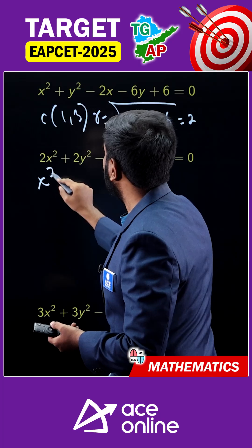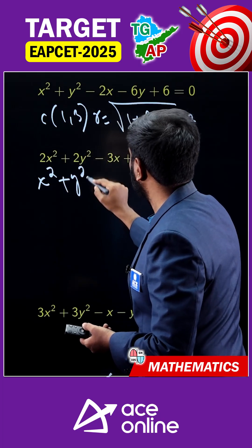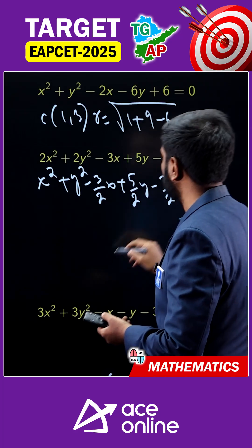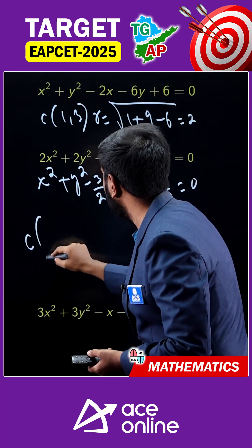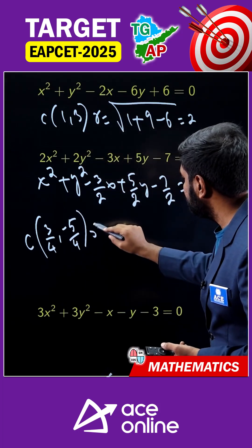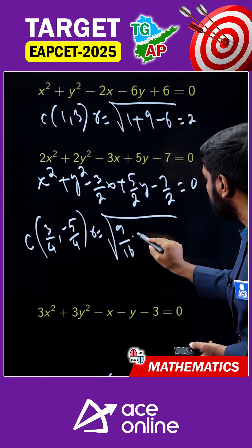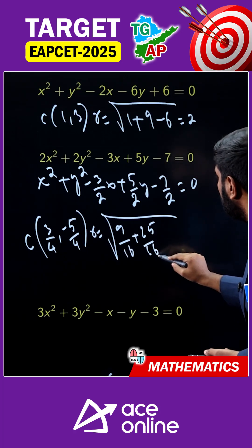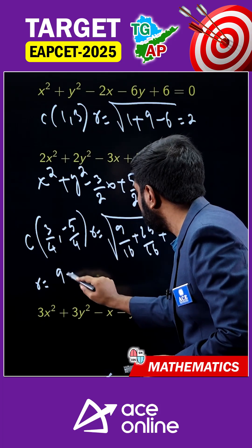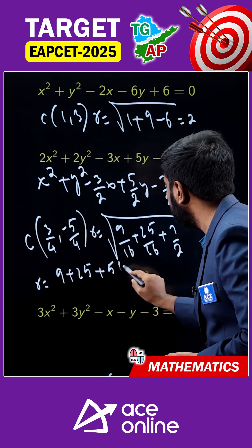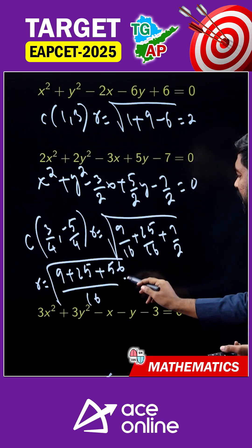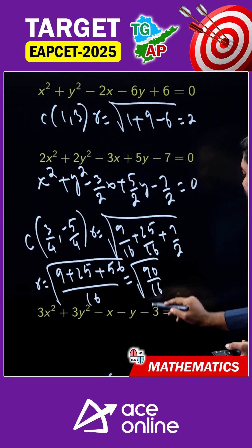Using the standard formula, divide by 2 to get: x² + y² - (3/2)x + (5/2)y - 7/2 = 0. The center is (3/4, -5/4). For the radius: root(g² + f² - c) = root(9/16 + 25/16 + 7/2). Taking LCM as 16: (9 + 25 + 56)/16 = 90/16, so the radius is root(90/16).